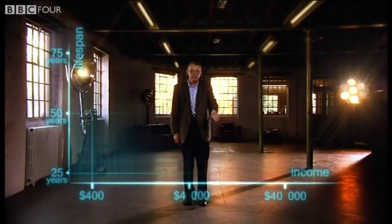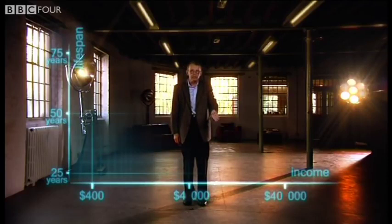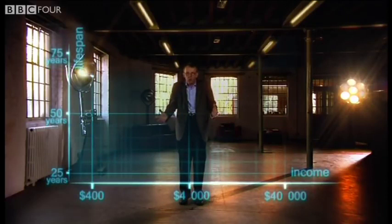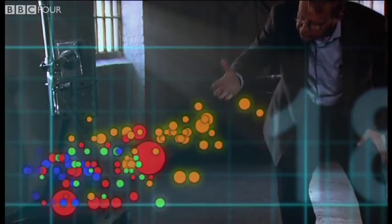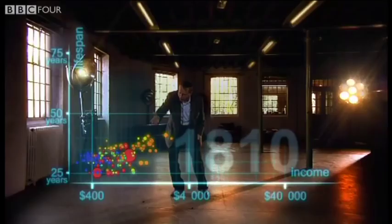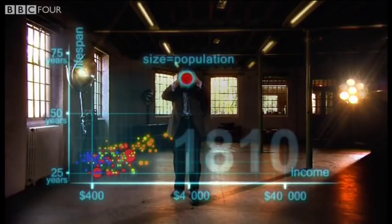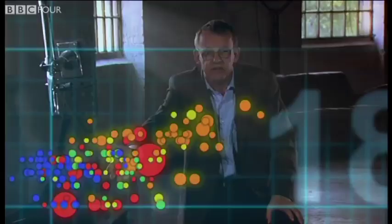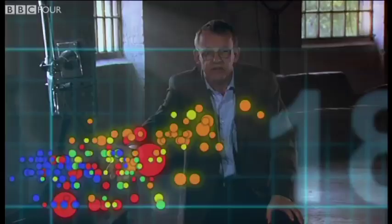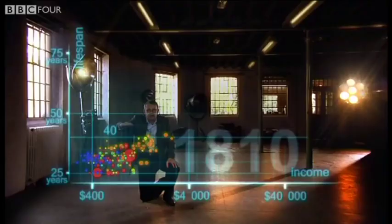Down here is poor and sick, and up here is rich and healthy. Now I'm going to show you the world 200 years ago in 1810. Here come all the countries: Europe brown, Asia red, Middle East green, Africa south of Sahara blue, and the Americas yellow. The size of the country bubble shows the size of the population. And in 1810, it was pretty crowded down there — all countries were sick and poor. Life expectancy was below 40 in all countries, and only the UK and the Netherlands were slightly better off, but not much.